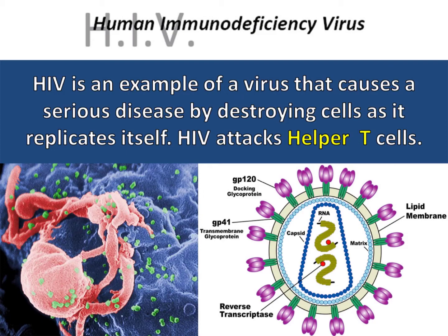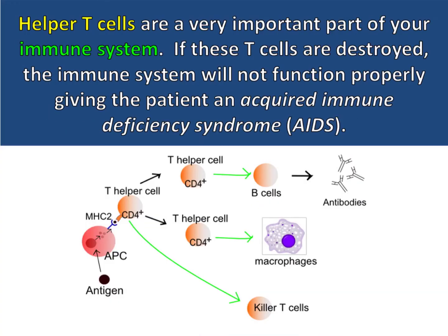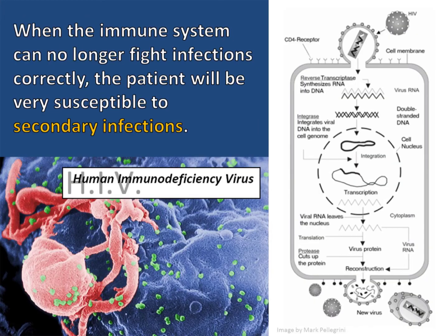HIV attacks helper T cells, which are a very important part of your immune system. If these T cells are destroyed, the immune system will not function properly, giving the patient an acquired immune deficiency syndrome, or AIDS.